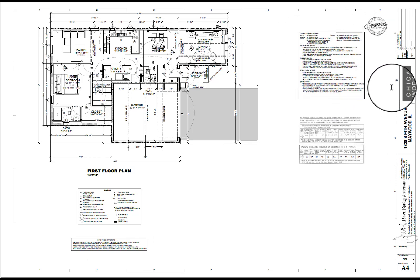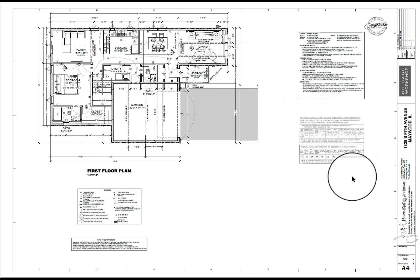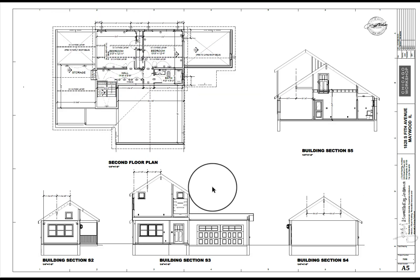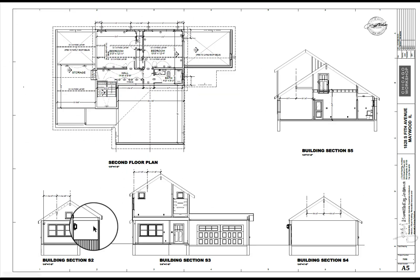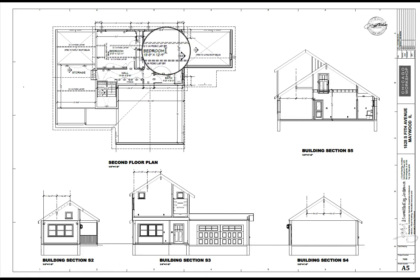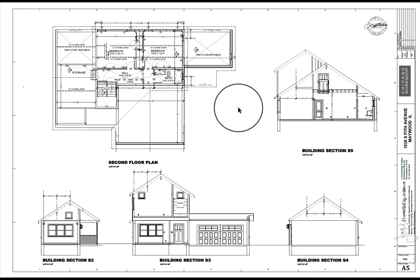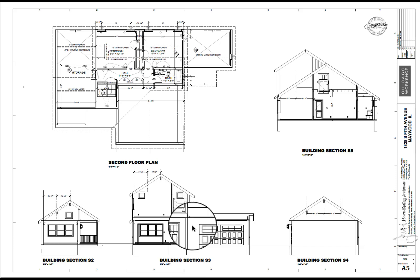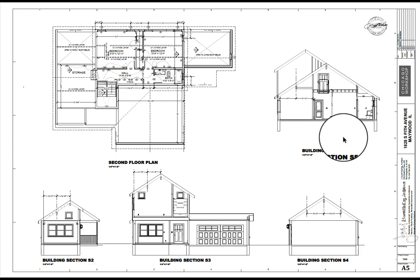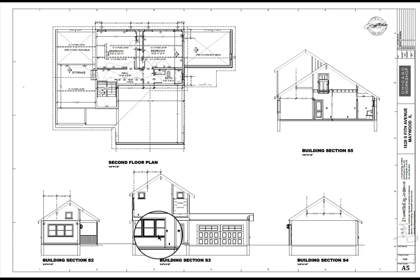Make sure you figure everything out before you start building. There's code-required structural information, code-required insulation information, and values for the windows as required by code. The second floor plan is on this set, along with extensive sections which are easy to do with Chief — you can cut them easily, transfer to a detail sheet, erase extraneous information, and send it to your layout sheet.